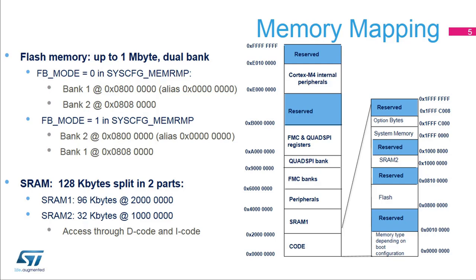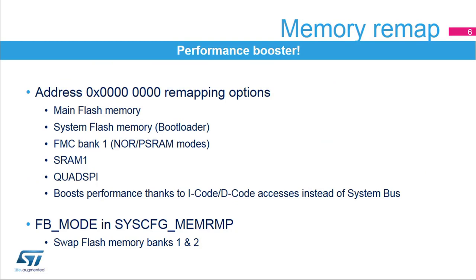SRAM1 is located in the usual ARM memory space for RAM, while SRAM2 can be directly accessed through data, code, and instruction code buses with zero wait states and can be used for code execution. The memory remap at address 0 allows you to boost performance thanks to instruction and data bus access instead of using the system bus. The memory remap at address 0 is selected using the mem_mode bits in the system configuration remap register, allowing you to select either the main flash memory, the system flash memory, FMC bank 1 addressing NOR or PSRAM, SRAM1, or the quad SPI. The FB mode bit allows you to swap flash memory banks 1 and 2, enabling boot from either bank 1 or bank 2.